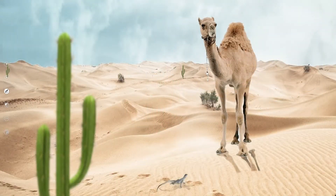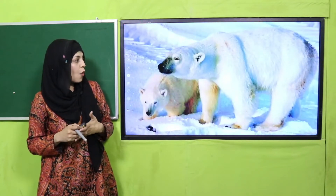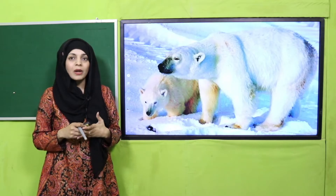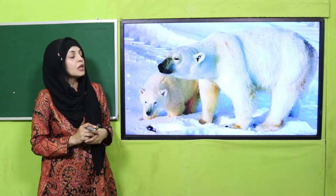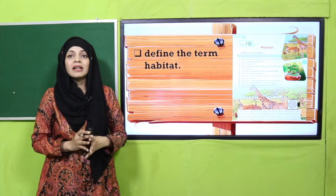Next you can see a desert with sand, a cactus plant, and a camel — it is the desert habitat. It is home to many animals like desert rats, scorpions, snakes, and plants like cactus and aloe vera. Now there is a polar bear — this is the polar region where it is extremely cold. Animals like polar bears, penguins, and arctic foxes live in the polar region habitat.